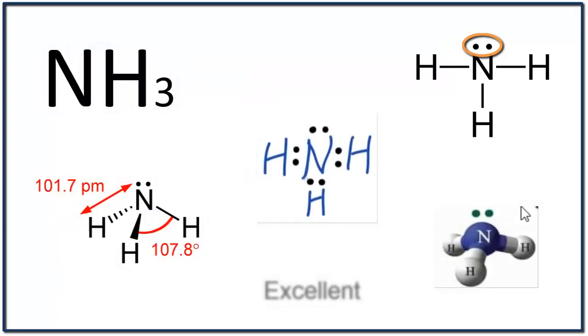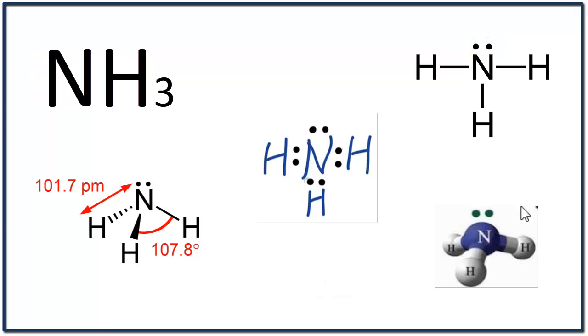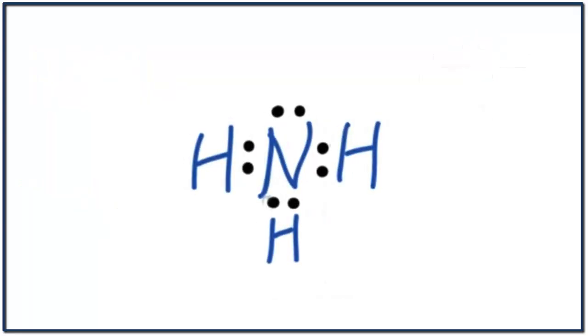NH3 is an excellent example. First, we'll draw the Lewis structure for NH3. Next, we can calculate the differences in electronegativity between bonds, and we see that the NH bond is indeed polar. But let's go back and look at the shape of the molecule to see if it's symmetrical.